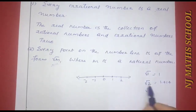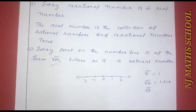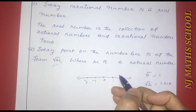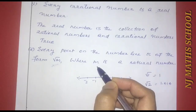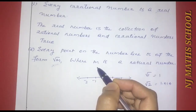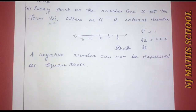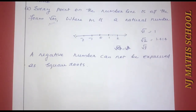These values correspond to points on the number line. However, in the case of negative numbers, we cannot mark them on the number line using square roots of natural numbers. A negative number expressed as a square root would involve complex numbers. Therefore, this statement is false.